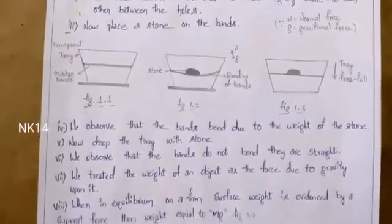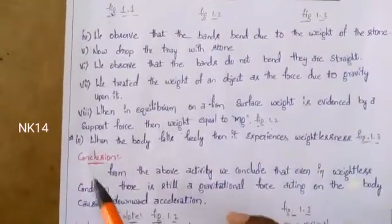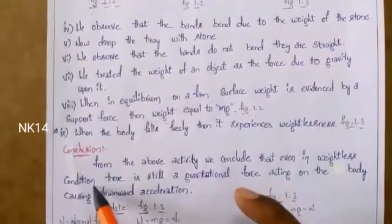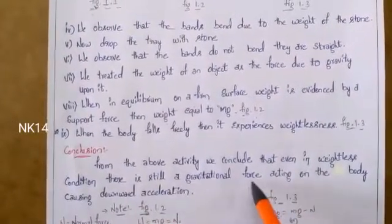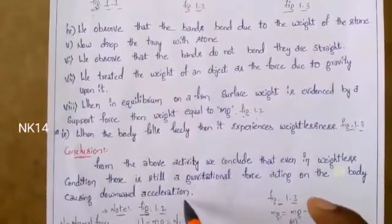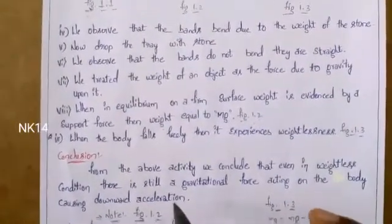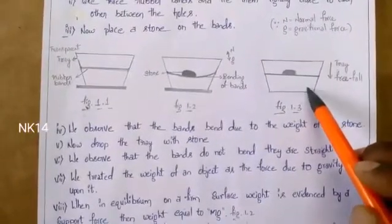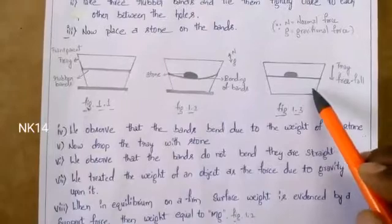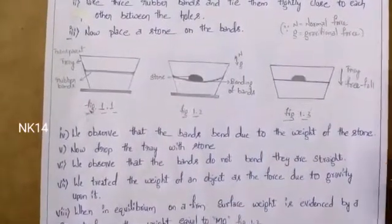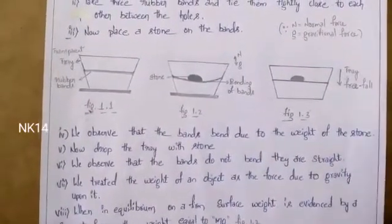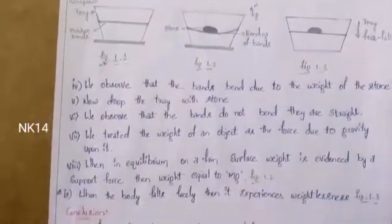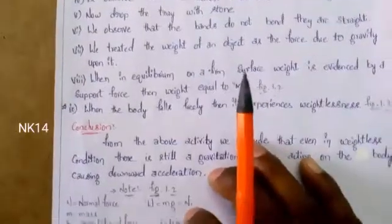From the above activity, we can conclude that even in a weightless condition there is still a gravitational force acting on the body, causing downward acceleration. Though the weight of the object is zero, there is still an external force acting on the body — the gravitational force — which causes the tray to fall freely to the ground.